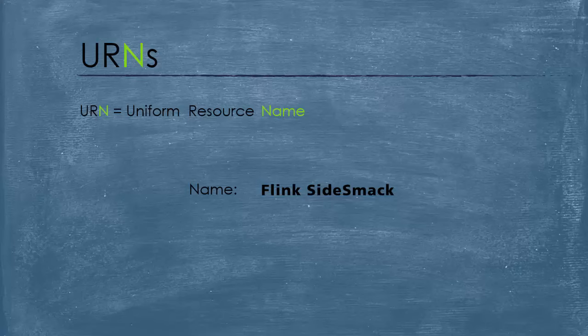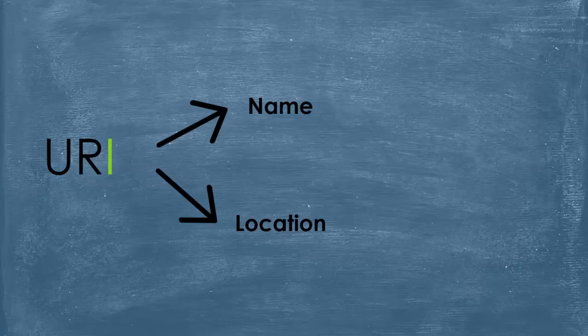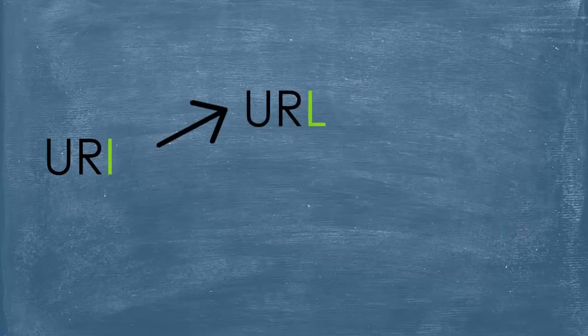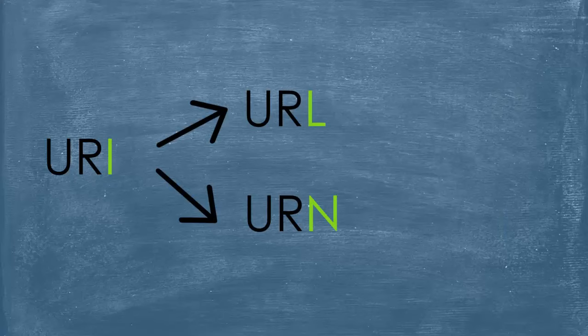You may be wondering: if URIs can specify the name and the location of the resource — one of them or both at the same time — and URLs use just the location while URNs indicate just the name, then technically a URI is either a URL or a URN. Therefore, every URL and every URN is a URI. Well, that's true.